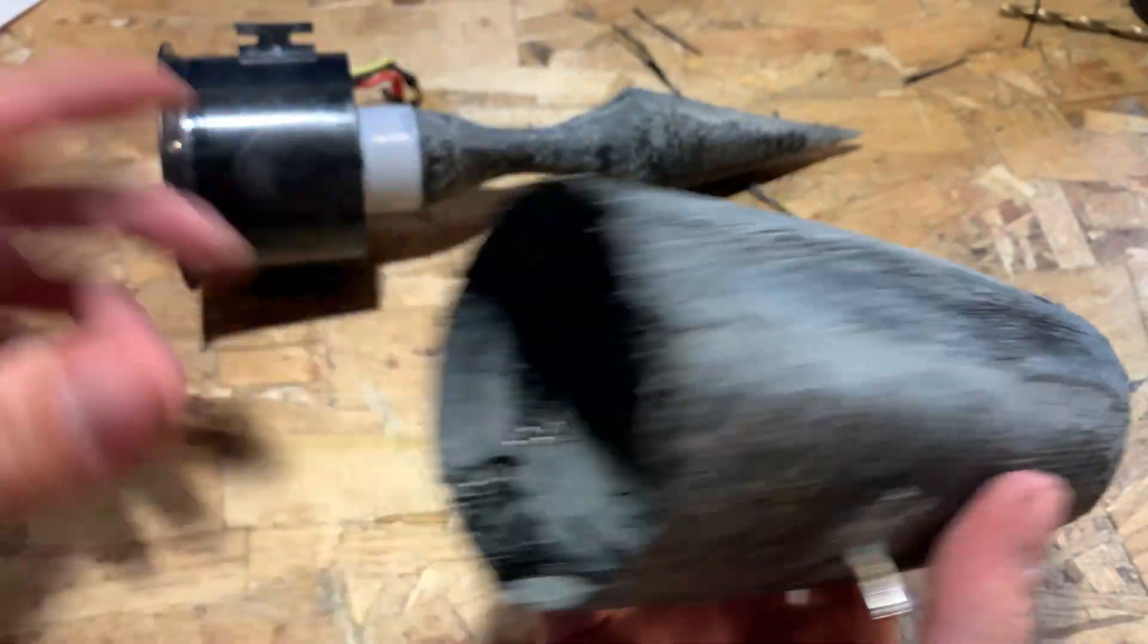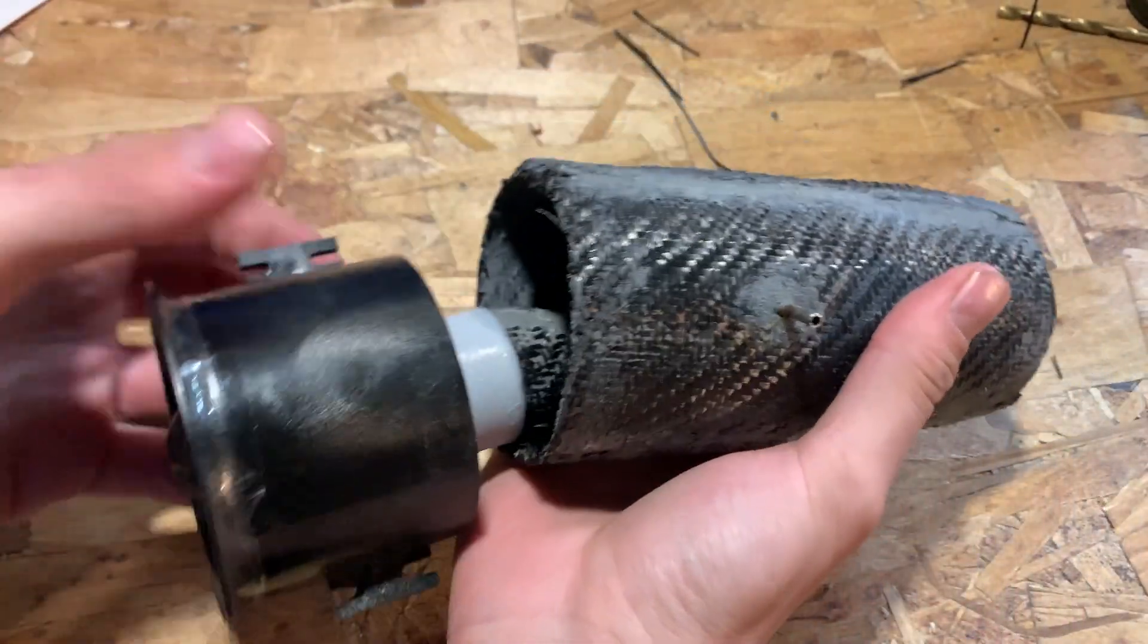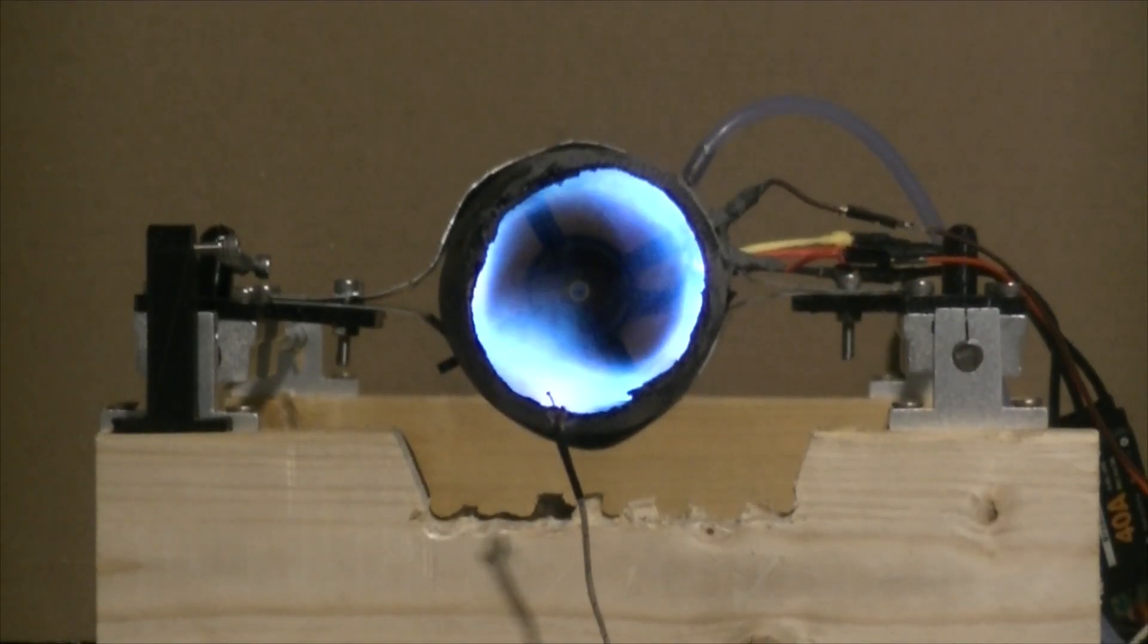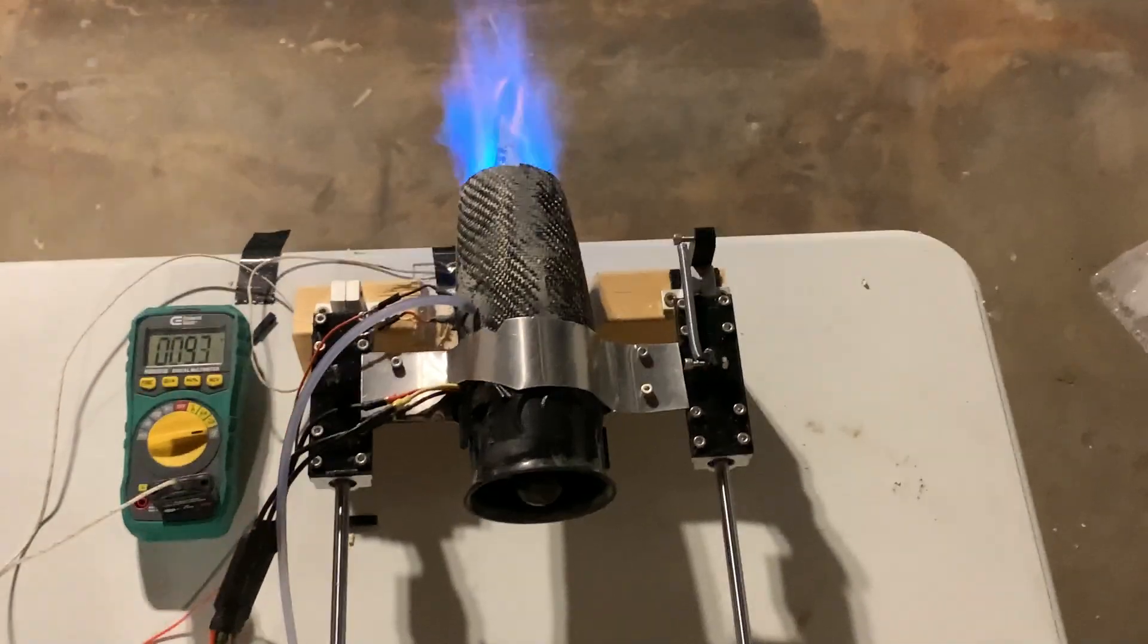In my last video, I successfully built a simplified version of a ramjet out of carbon fiber. Even though I got great results from that design, it still had many flaws, the biggest being able to reliably control the ignition and fuel flow.